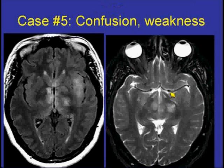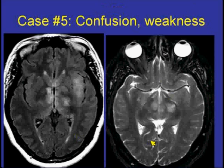We'll move to the fifth case. This is a young individual who had confusion as well as weakness after a viral illness. You're seeing the FLAIR scan on the left and a T2-weighted scan on the right.